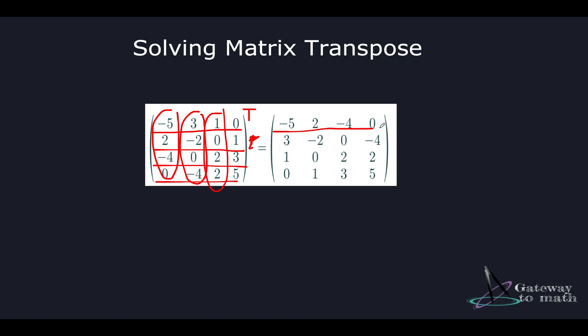The second row entries in my original matrix is 2, minus 2, 0, 1. We'll replace it with the entries in the second column which is 3, minus 2, 0, minus 4. These are my second row entries in the transpose matrix.